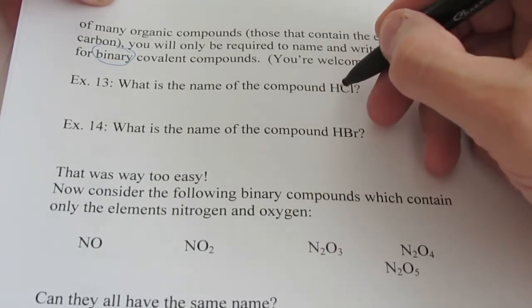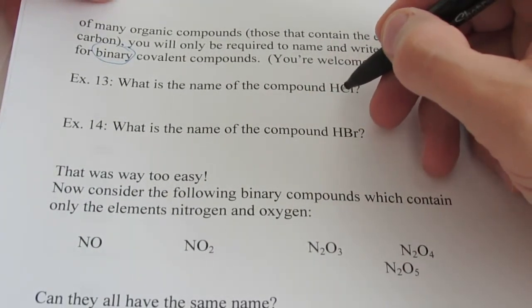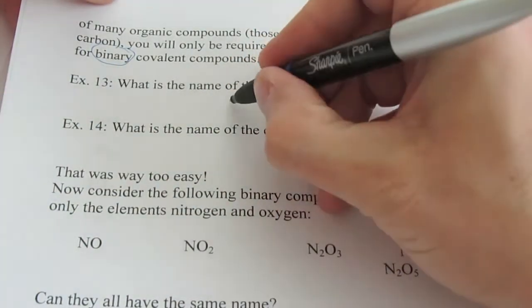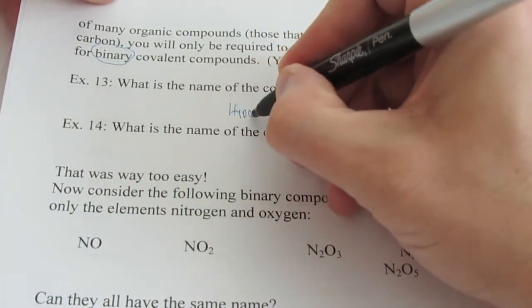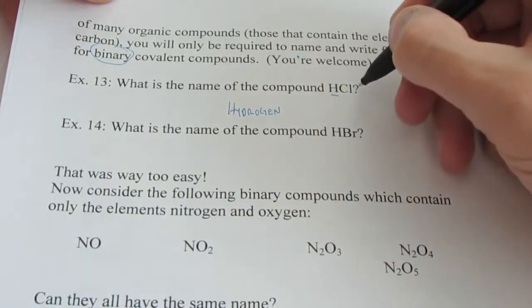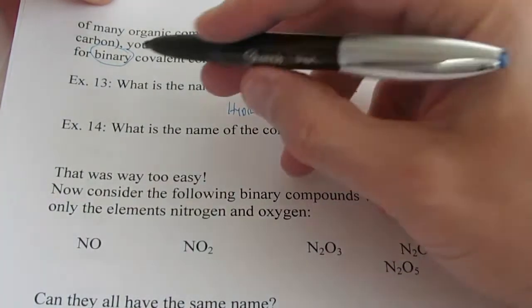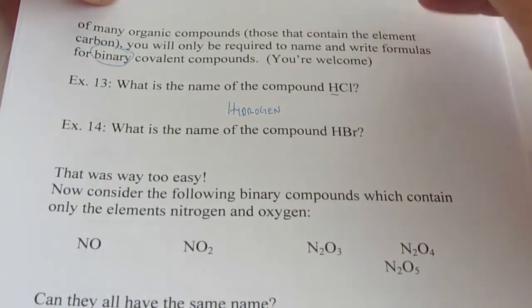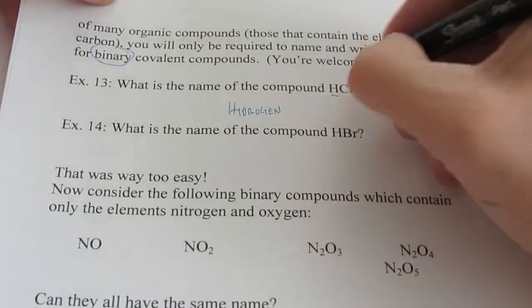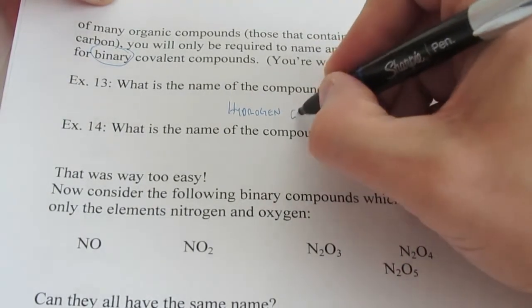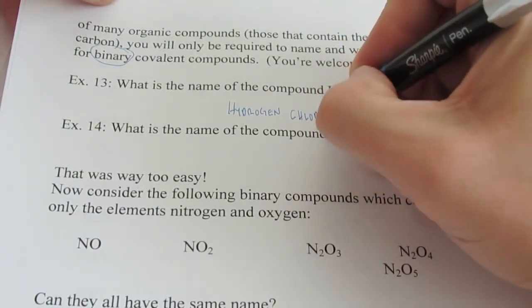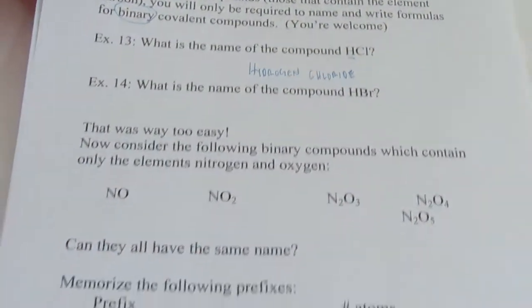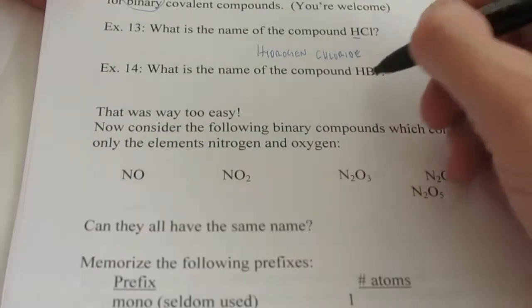We name the first non-metal by its given name. We don't change any ending. So in this case, HCl, we would say hydrogen. Then, we name the second element, and since it's binary, all binaries end with -ide. So instead of saying chlorine, I would say chloride. So this is called hydrogen chloride, HCl. Pretty easy? Sure it is.